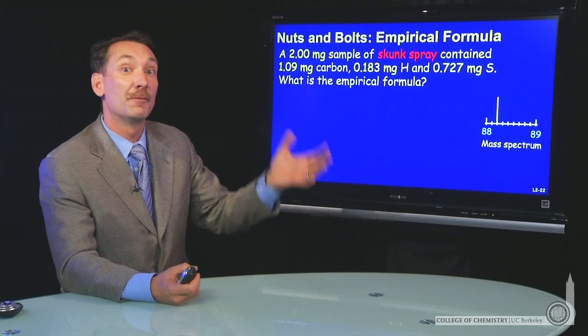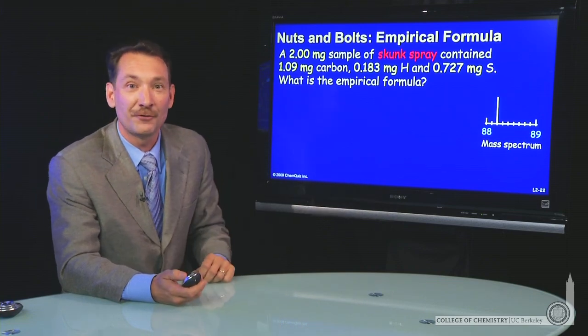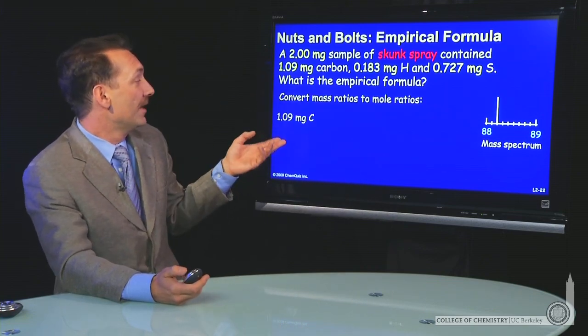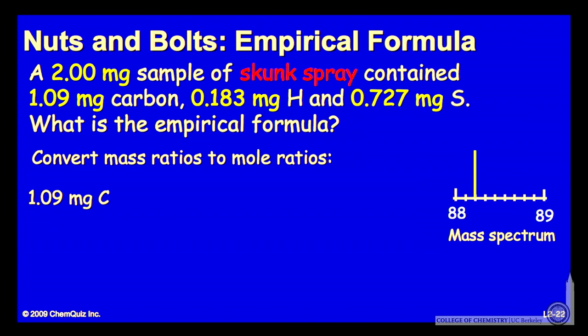What we need to do is convert those to mole ratios to get to the empirical formula. So 1.09 milligrams of carbon, convert that to moles of carbon by using a conversion factor with the relative molar mass of carbon. In this case, we can use milligrams and millimoles. So 1.09 milligrams of carbon is 0.091 millimoles of carbon.